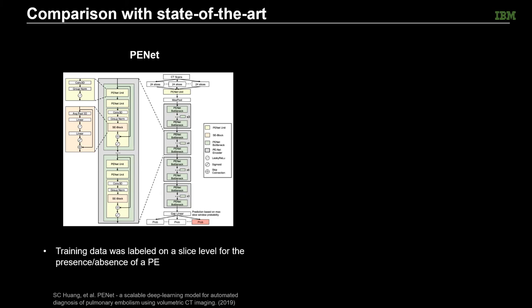We also compared with the state-of-the-art prior work PE-net. In PE-net, their training data was labeled on a slice level for the presence or absence of PE. However, our data were annotated every 10 mm in stage 1, and we only use patient-level labeled data in stage 2. Because of this inconsistency, we did not run PE-net on our data, and we only show their reported results on their own dataset.